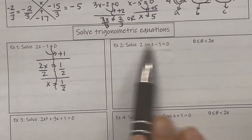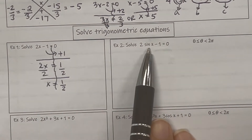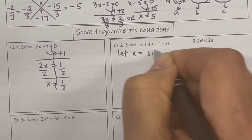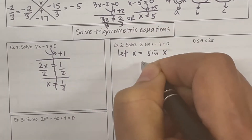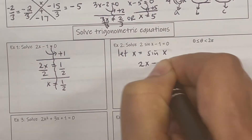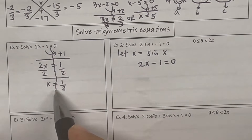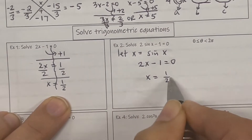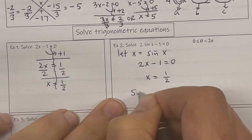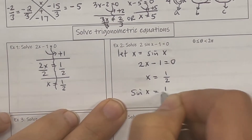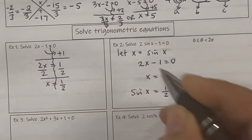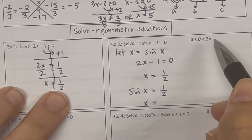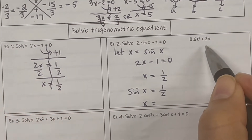Trigonometric equations are the same exact thing. What we're going to do is replace the trigonometric function with x, so let x equal sine x. So when you see sine x, you're going to put x. Do you see it's the exact same question? So that means x is 1 half. What's x again? Sine x, so sine x equals 1 half — and that's how you solve trigonometric equations. So where is sine equal to 1 half on the unit circle?